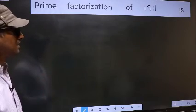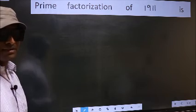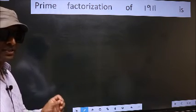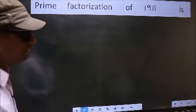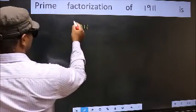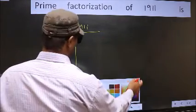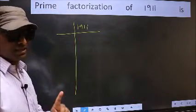Prime factorization of 1911. To do prime factorization, first we should frame it in this way: 1911. This is step 1.